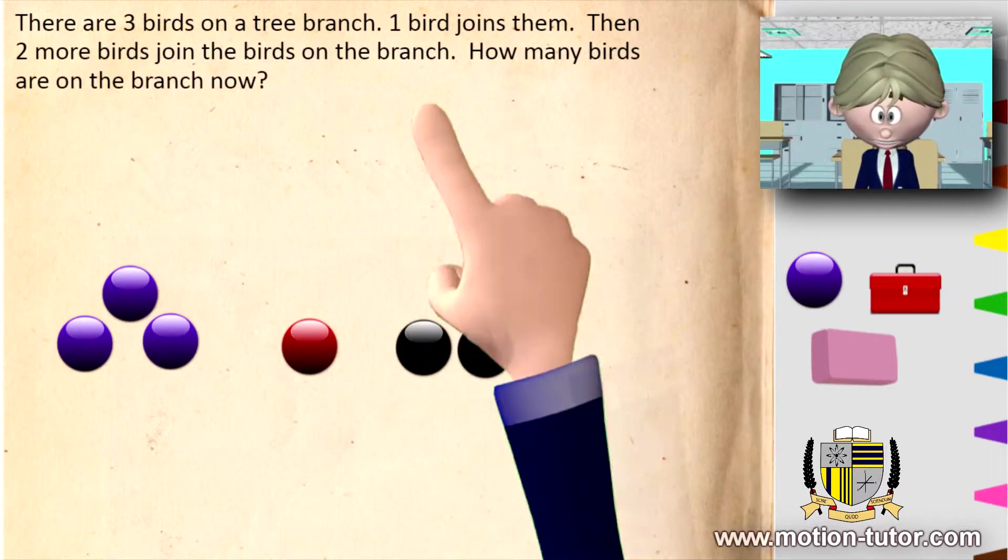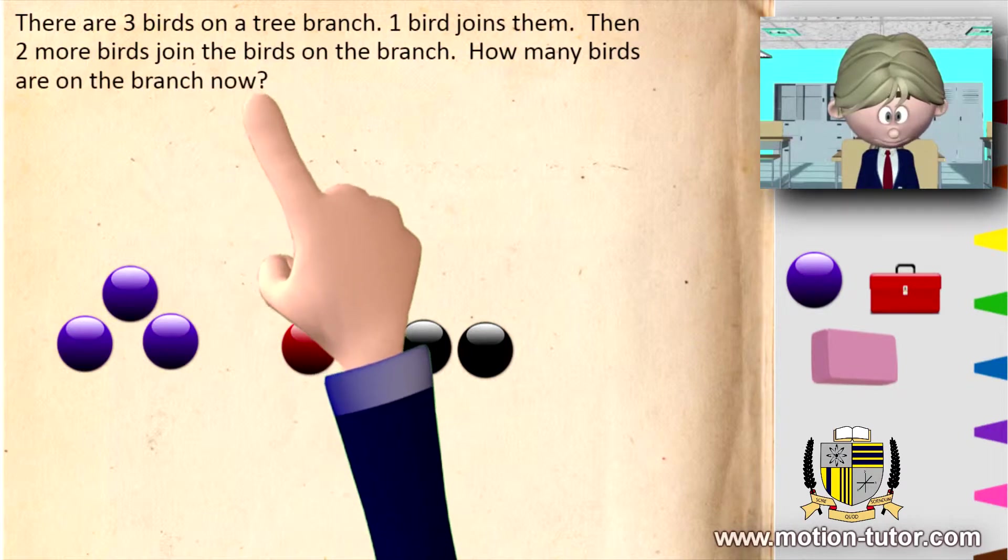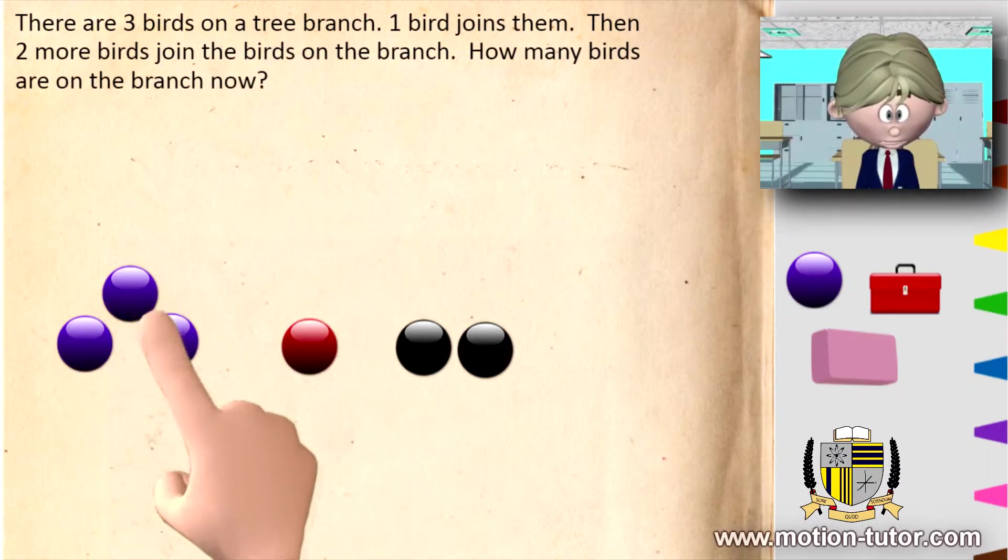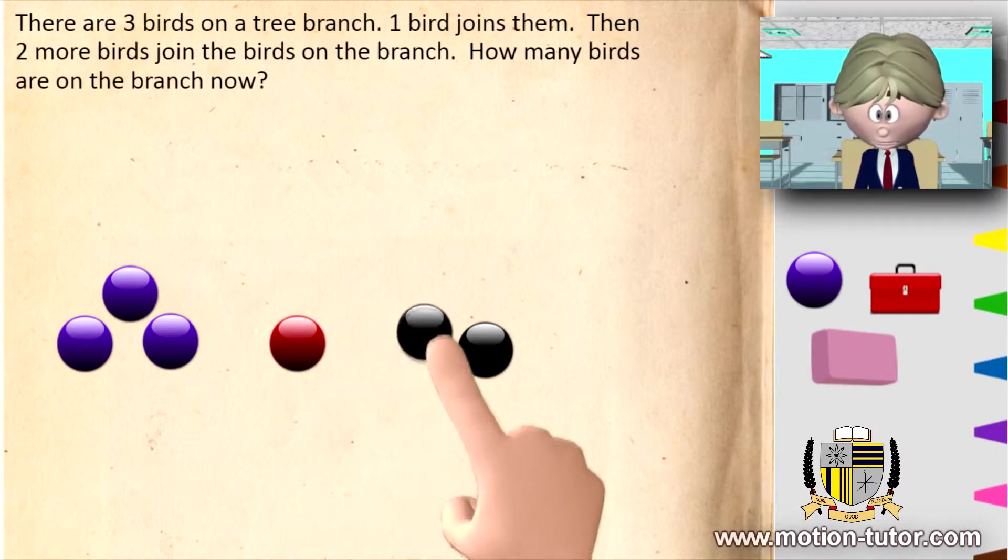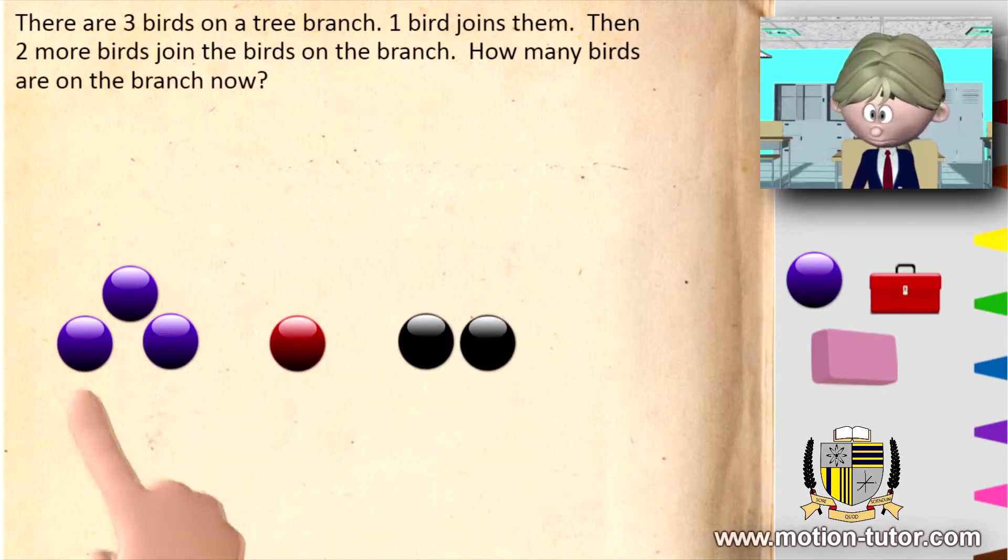How many birds are on the branch now? So remember there were three. Then one flew in and joined them. And then two more came in. So how many birds are on the branch now?